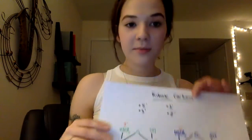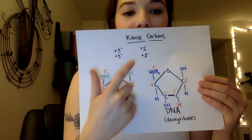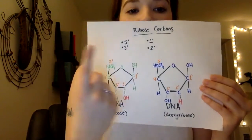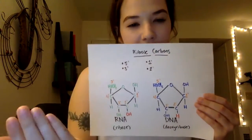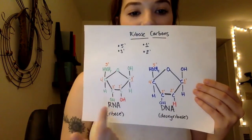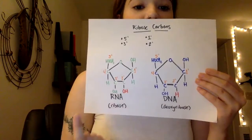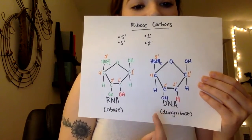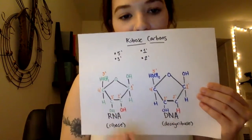Then we have ribose carbons: one prime, two prime, five prime, and three prime. One prime is where the bases attach. Two prime indicates whether it has an oxygen or no oxygen — RNA has an oxygen and DNA, deoxyribose, does not have an oxygen.